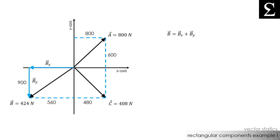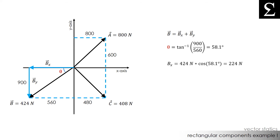Let's move on to force B. We can see graphically that the components of B, BX and BY, are acting to the left and to the bottom respectively. This means we will have a negative rectangular component in the X direction and a negative rectangular component in the Y direction. The first thing we need to do is calculate theta, which is the tangent inverse of 900 divided by 560, equal to about 58.1 degrees. BX is equal to 424 newtons times the cosine of 58.1 degrees, which equals 224 newtons. BY is equal to 424 newtons times the sine of 58.1 degrees, which equals 360 newtons.